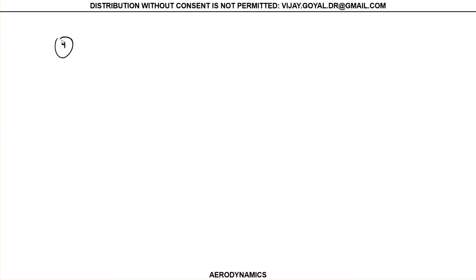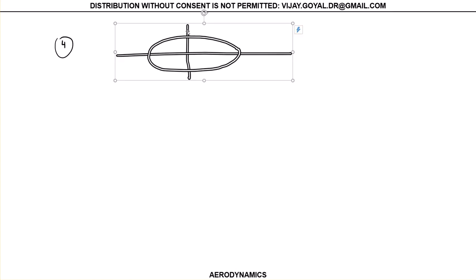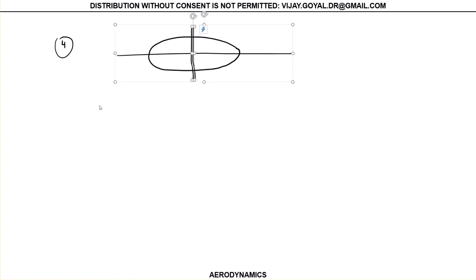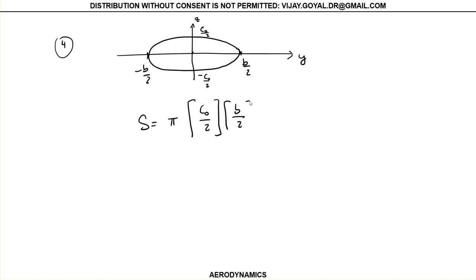For the perfect ellipse, you have the following geometry: this is your y-axis, this is your z-axis. This location is c sub zero minus c sub zero over 2 — this is at the root. This value is b over 2; this value is minus b over 2. This span equals c sub zero over 2 times b over 2. This is true only for elliptic wings. You can use this expression if you know the value at the root.